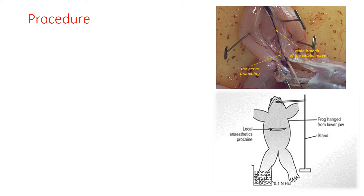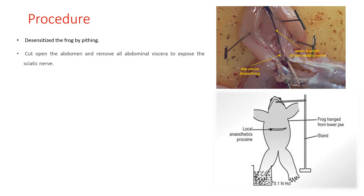Procedure: Desensitize the frog by pitting. Cut open the abdomen and remove all abdominal viscera to expose the sciatic nerve. You can see here that this is the sciatic nerve. We have to cut near the abdomen area of the frog.